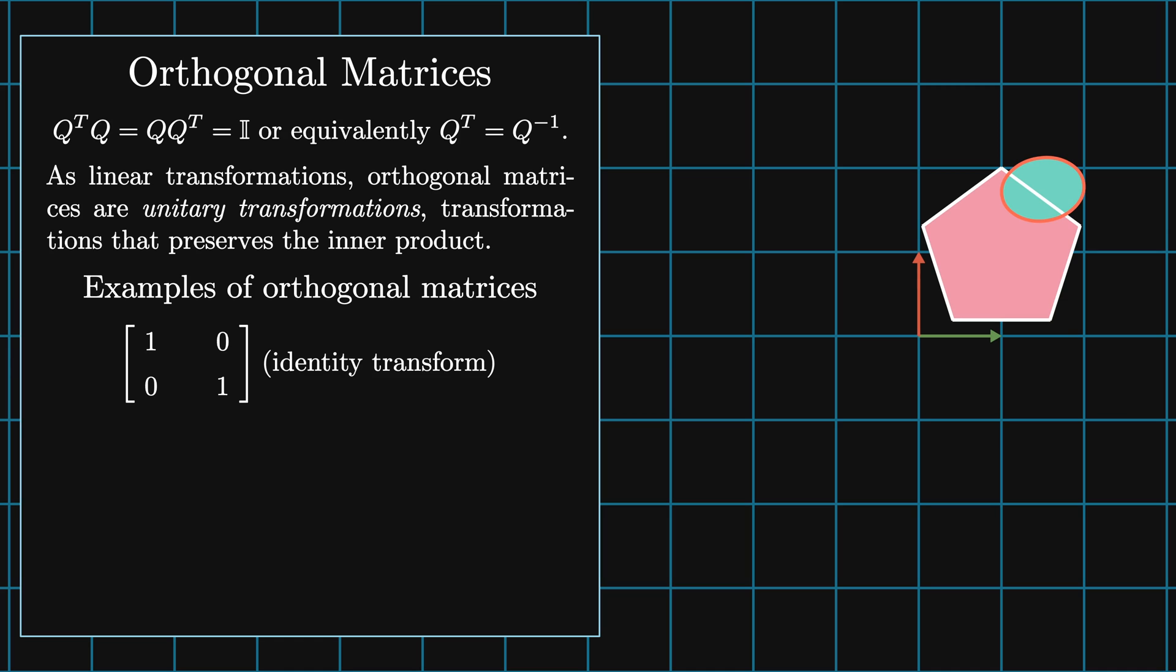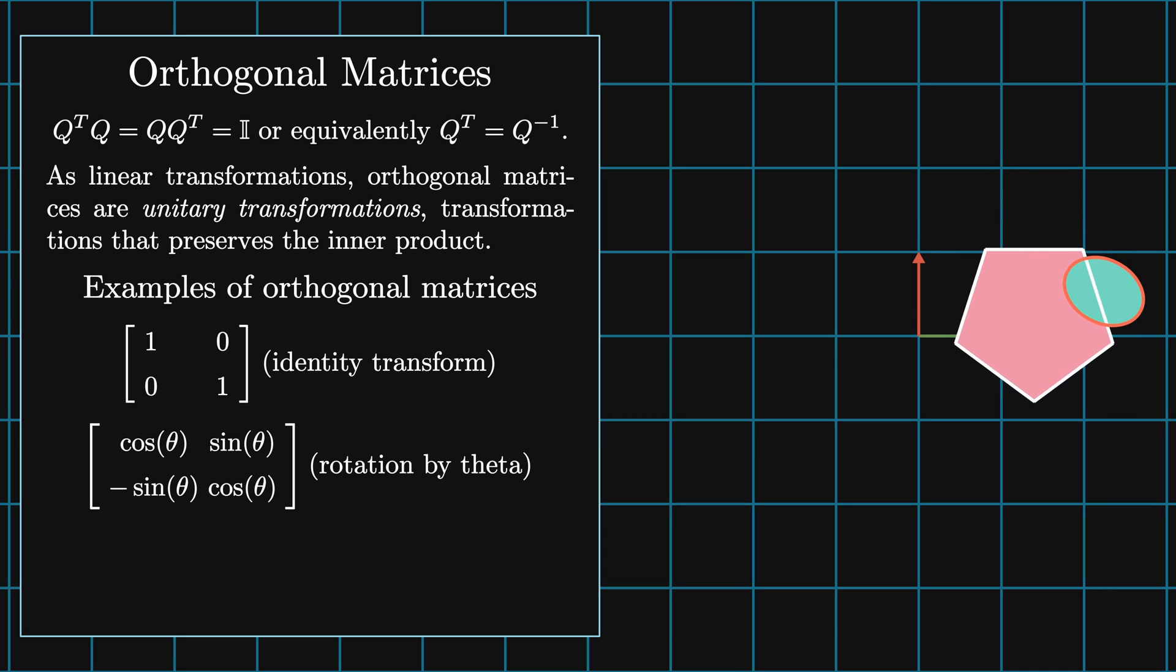First is the identity. This, of course, leaves the shapes unchanged. Secondly, we have a rotation matrix which rotates our objects about the origin by some angle theta. Lastly, we have a reflection matrix which reflects our shapes about the x-axis.